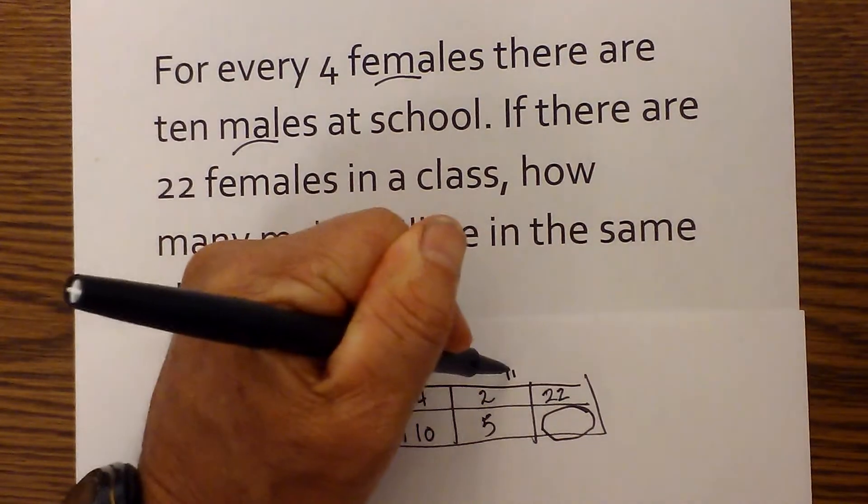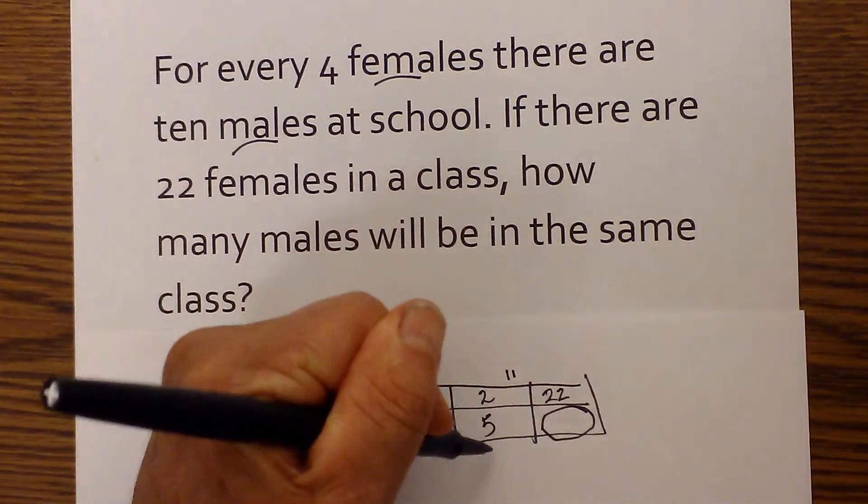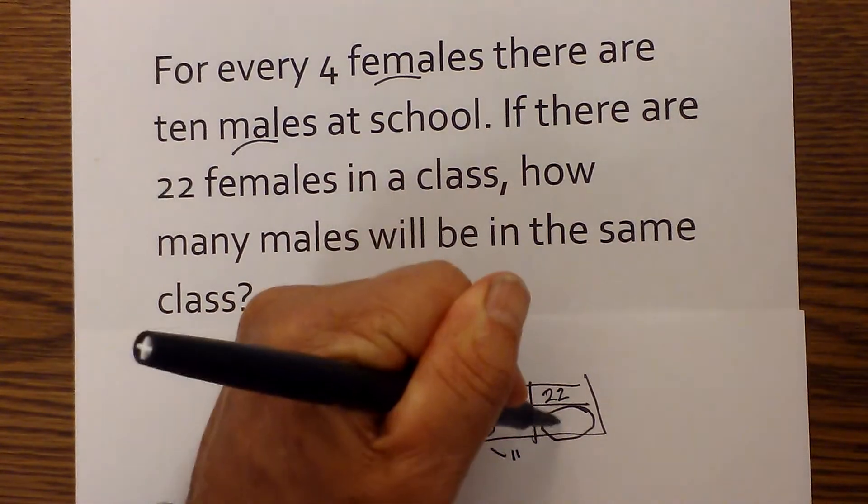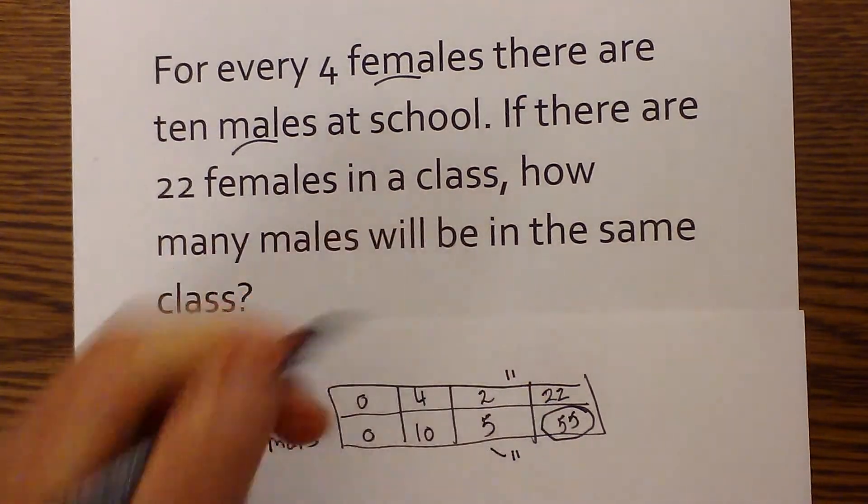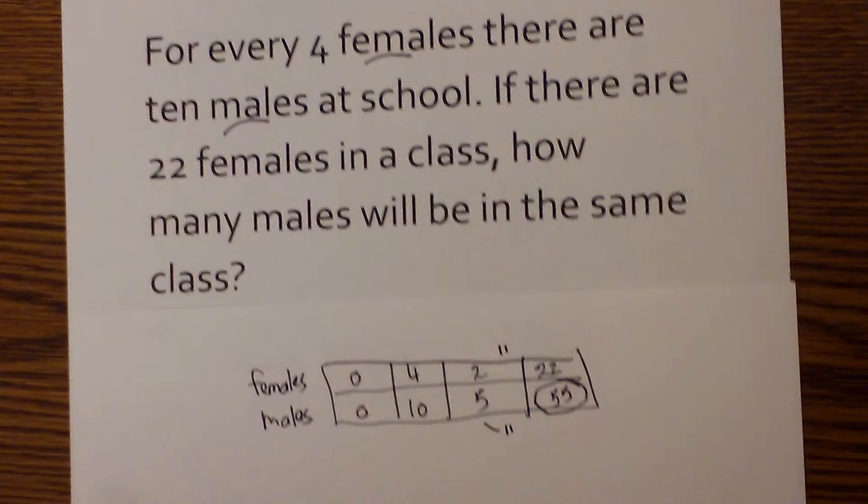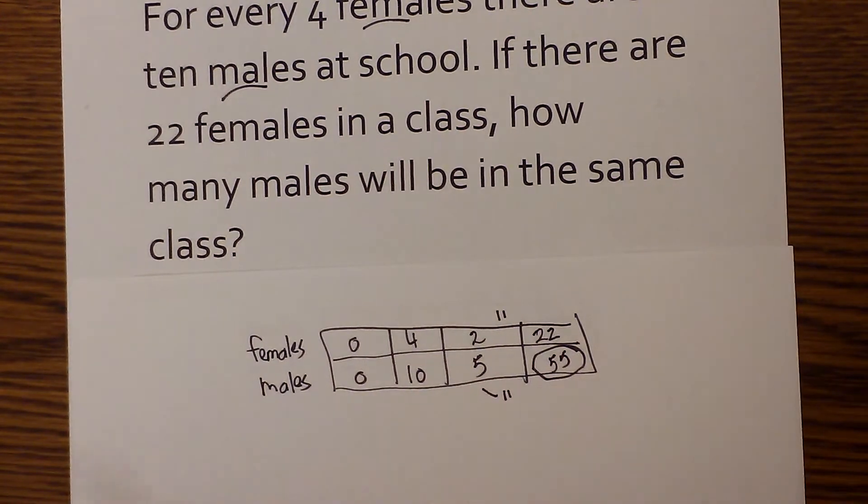What you do to the top, you do to the bottom. 5 times 11 is 55. So if you have 22 females in a class, you're going to have 55 males.